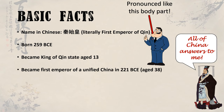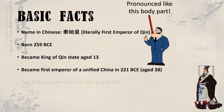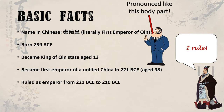At age 38, Qin became emperor of a unified China, or all of those states. He ruled until his death in 210 BCE, so just a few short years. However, his work in this time was massive — we'll explore this soon.